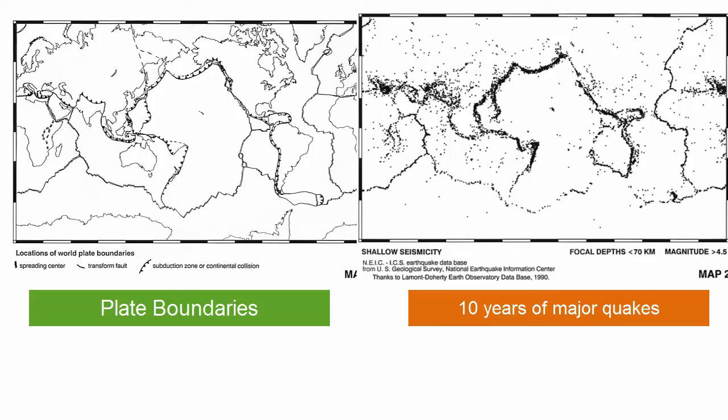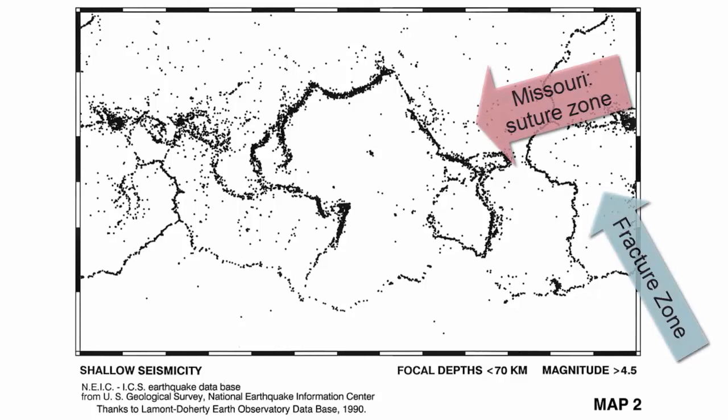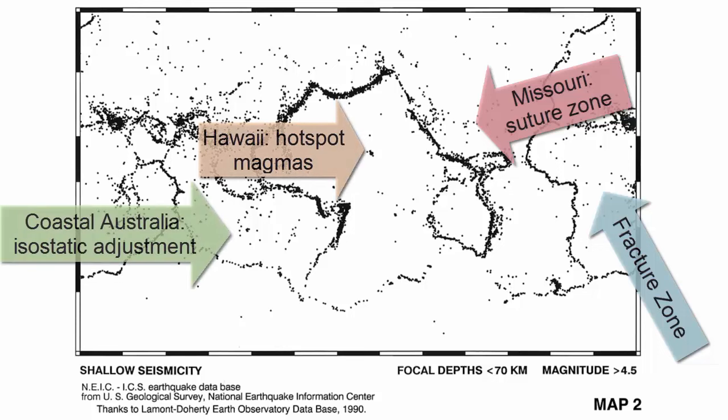You'll also notice earthquakes happening in areas where old plate boundaries have fused together, such as in fracture zones or old suture zones in the center of continents conjoined in the past. Minor earthquakes happen as magmas move through the crust above hotspots and where isostatic adjustment is happening, especially along coastlines.